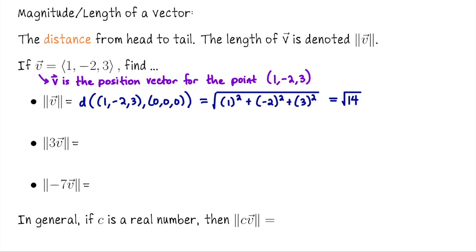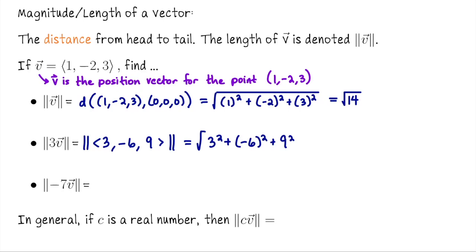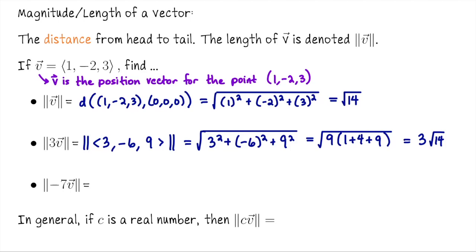What about the length of 3V? That's the same as the length of the vector 3, negative 6, 9. The length is the square root of 3 squared plus negative 6 squared plus 9 squared. All those terms are divisible by 9, so this is the square root of 9 times the quantity 1 plus 4 plus 9. The square root of 9 is 3, so this is 3 times the square root of 14. This shouldn't be surprising — scalar multiplication by 3 just lengthens V by a factor of 3, so we'd expect the length to go up by a factor of 3.